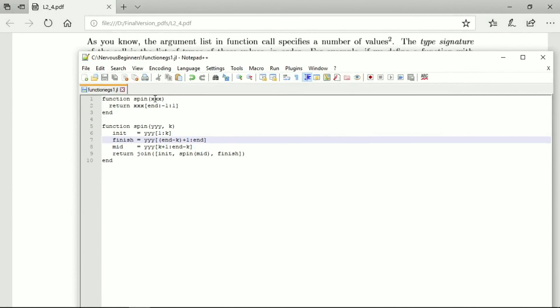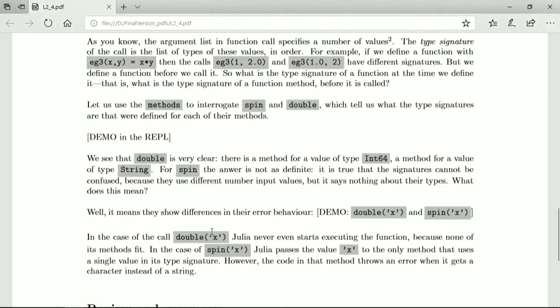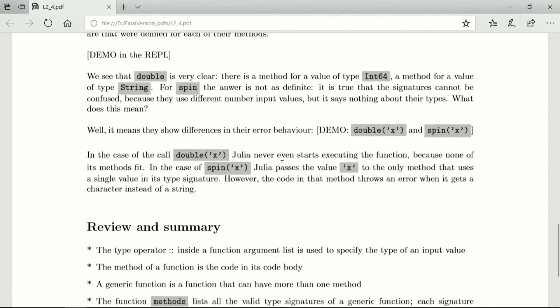So the input comes in, and we want to get the index of the input actually from back to front. And so the difference is that in the case of double, Julia doesn't even start executing the function because none of the methods fit, and no method is even started. In the case of spin x, Julia passes the value x to the only method that uses a single value in the type signature, and then that throws an error.